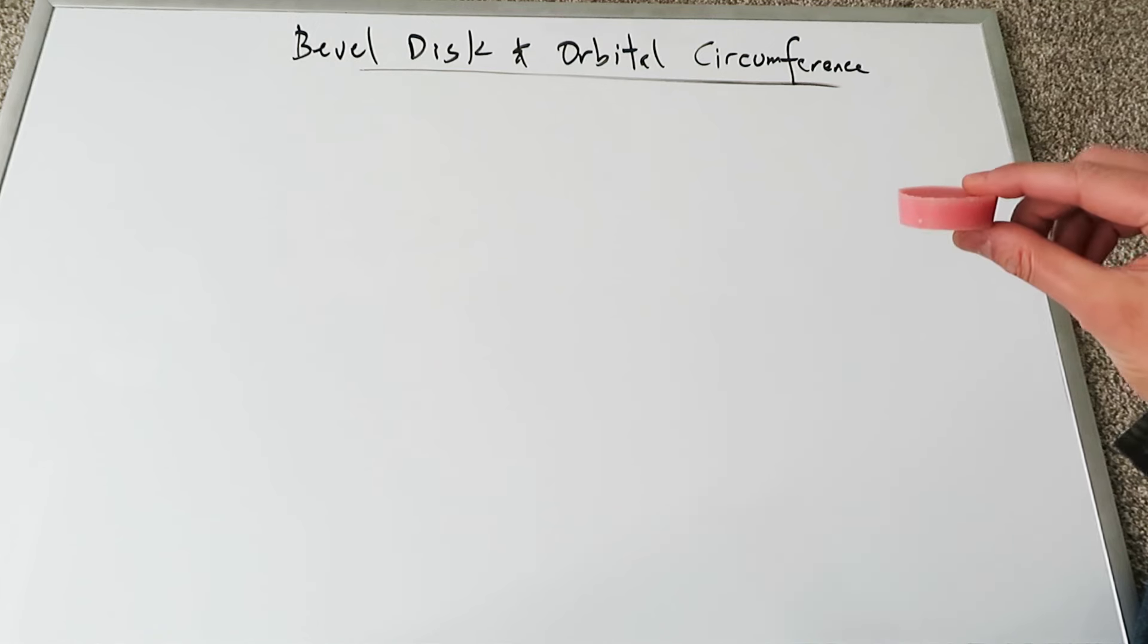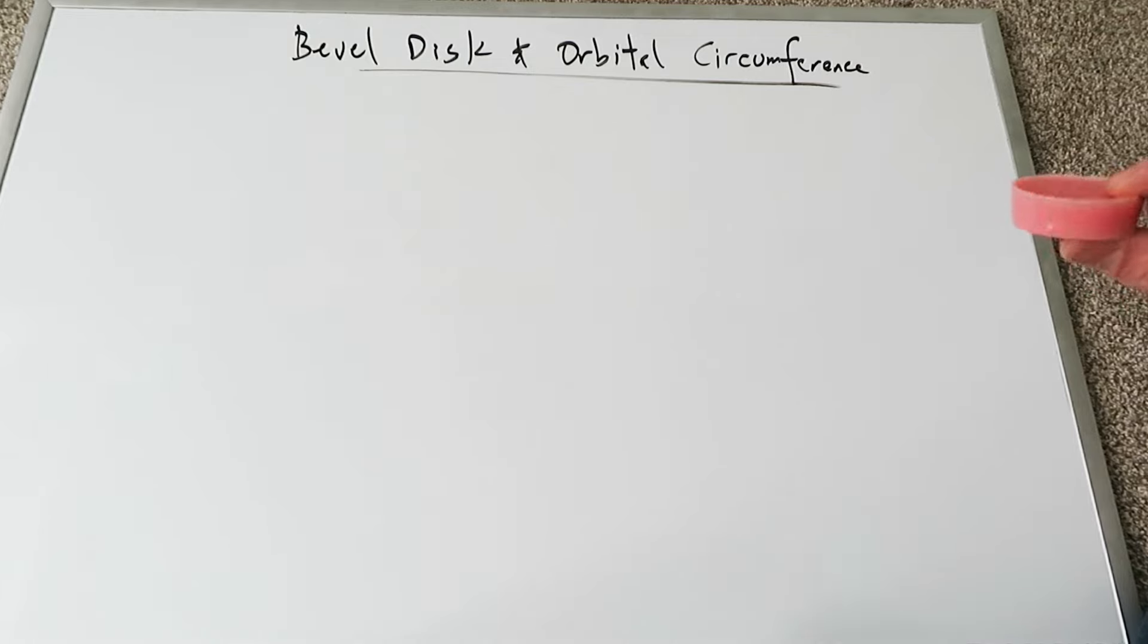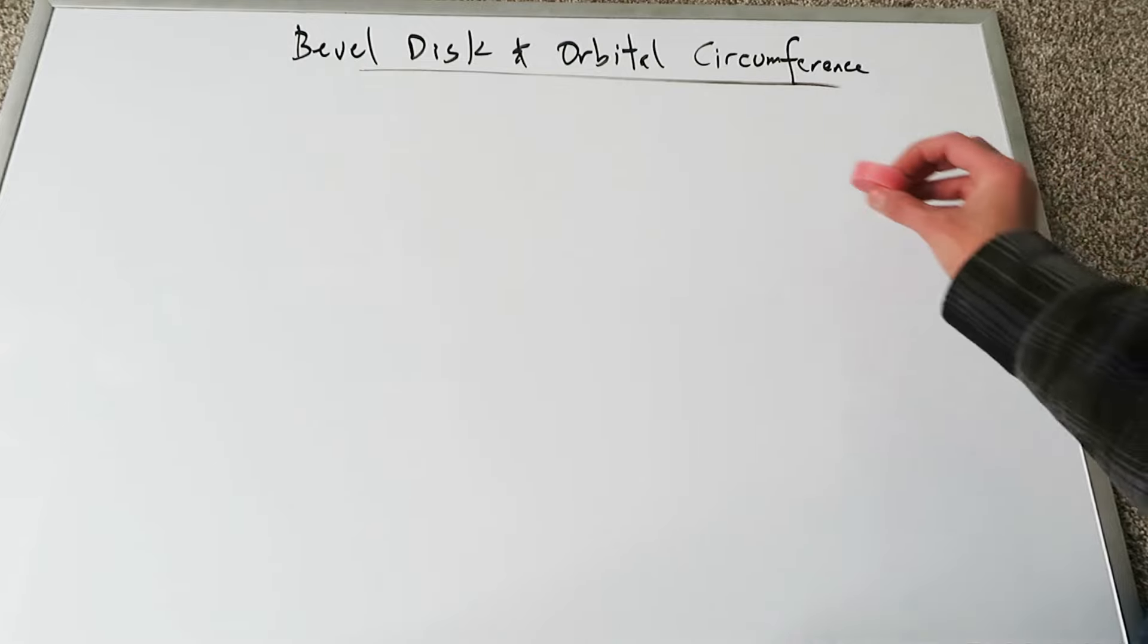So I'm going to take this little beveled disc I have, and I'll put it on the board, and you can watch it roll. When I give it a little bit of a tug, it will always have this tendency to assume an orbital path, a circular path, because of the nature of that beveled edge right on the side. And let's watch it move.